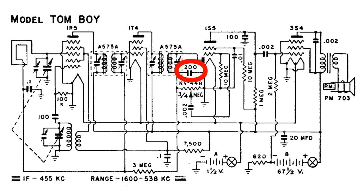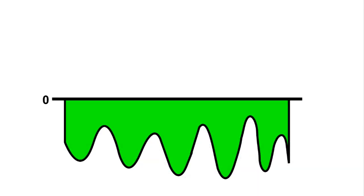And what that does is it drains off the carrier and now this is what we have, a negative varying audio signal.